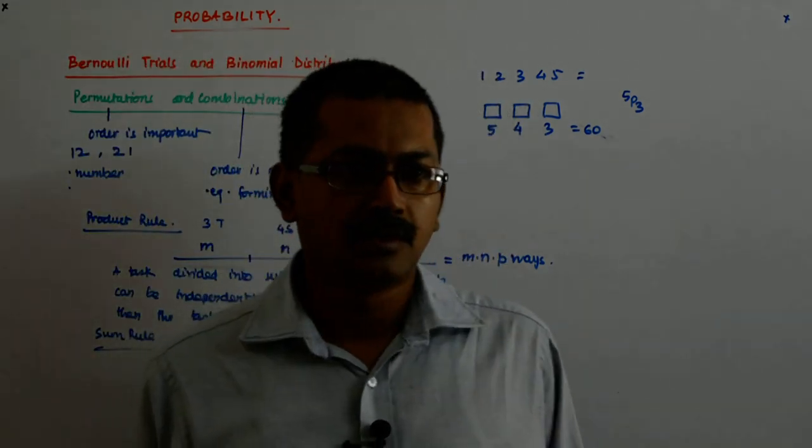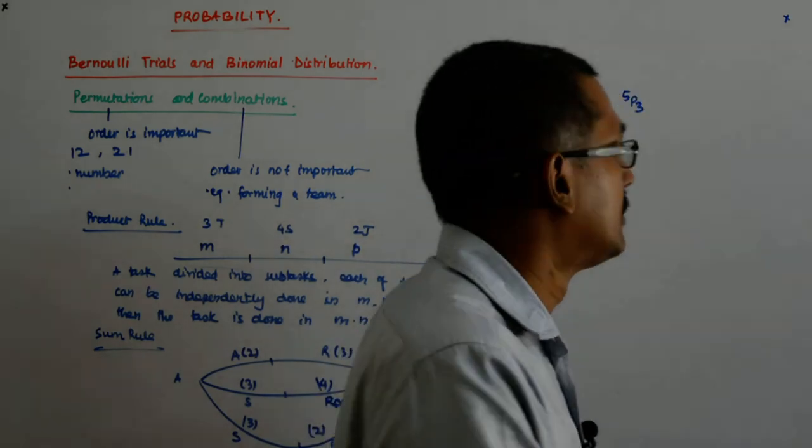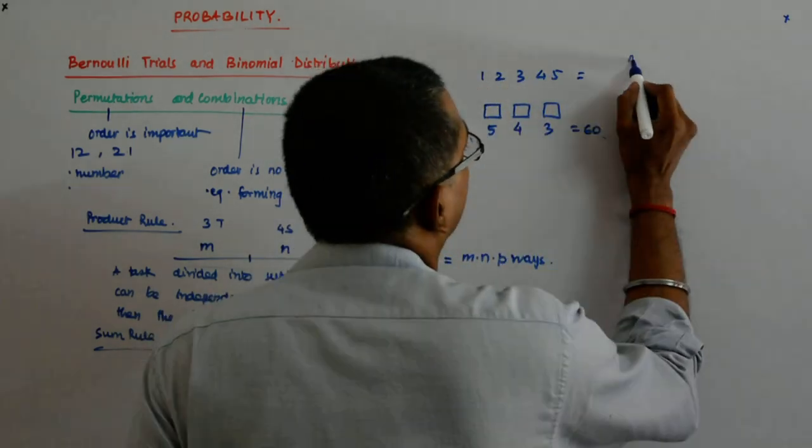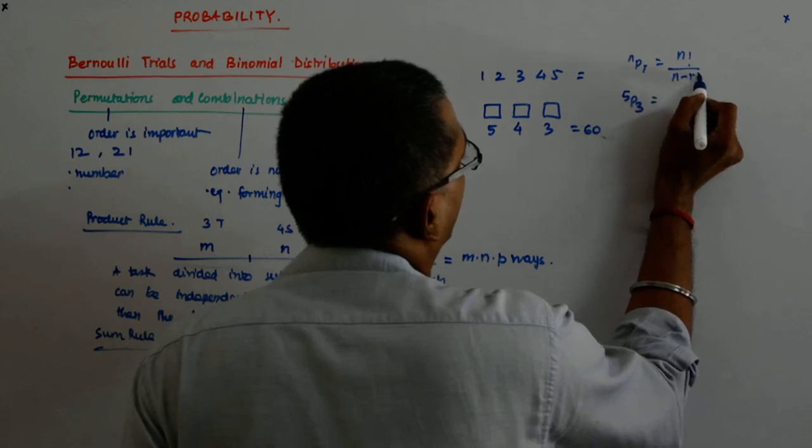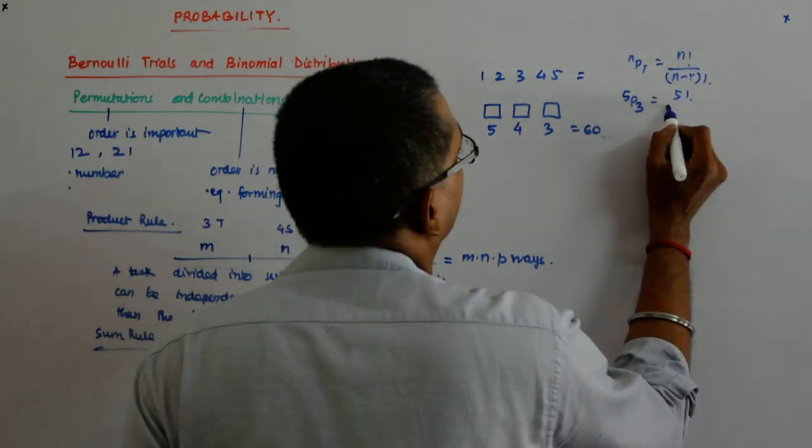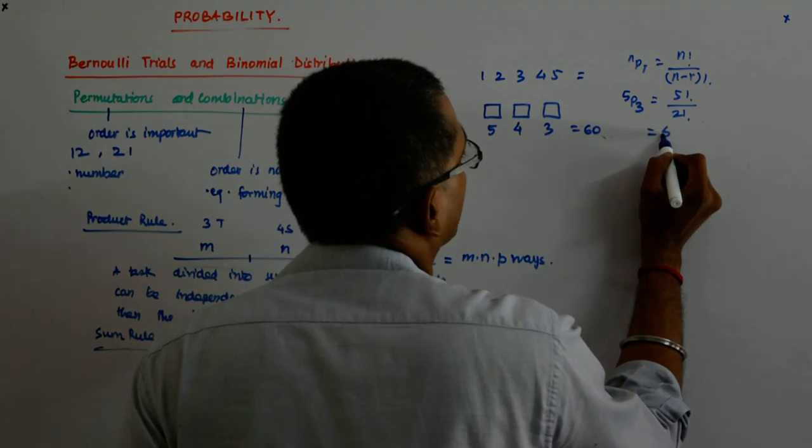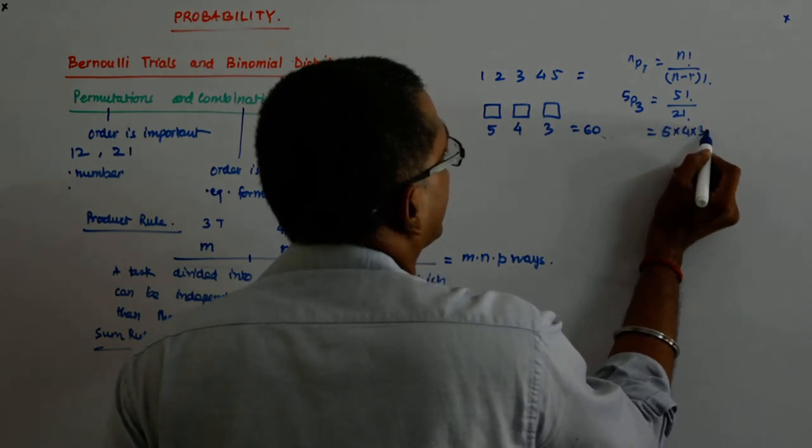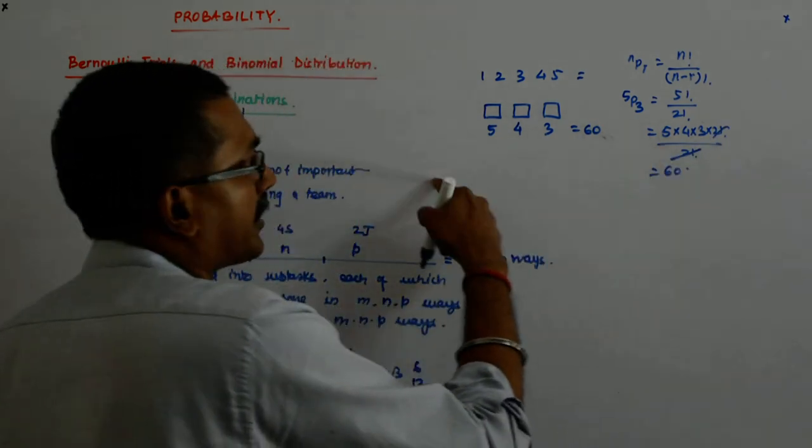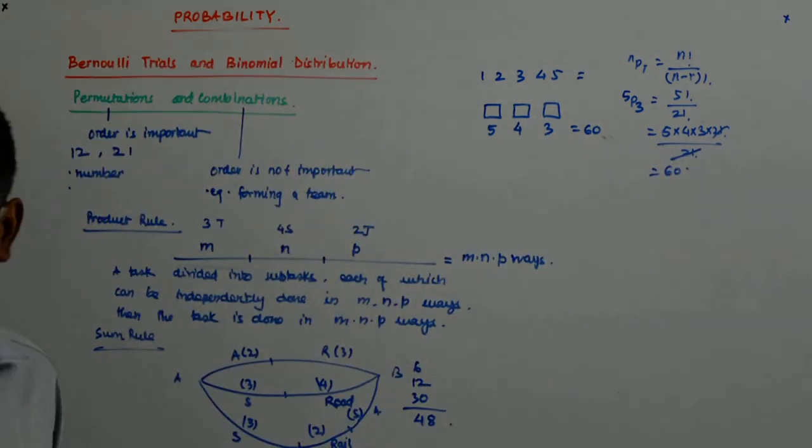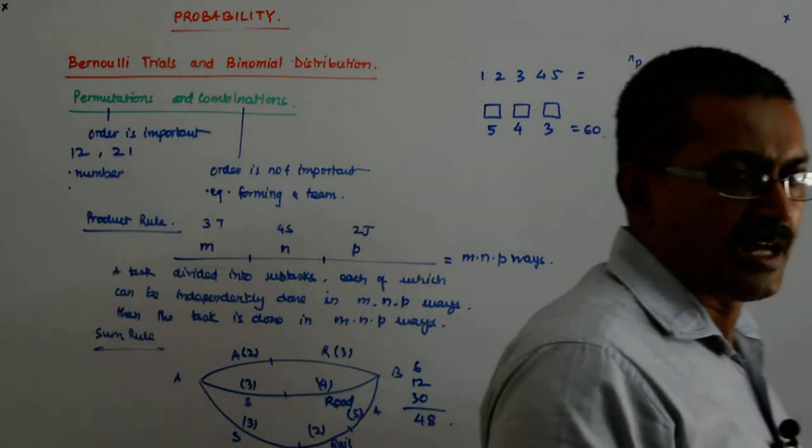And that is denoted by 5P3. 5P3 is what? Out of 5, permutation of 3 things. And how do we define that? We define NPR as N factorial upon N minus R factorial. So it is 5 factorial upon 2 factorial, which is 5 into 4 into 3 into 2 factorial divided by 2 factorial cancels, 60. What you got here you get there.